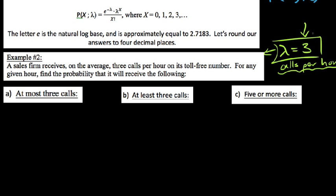Part A: find the probability that you get at most three calls. 'At most three calls' means three or less — it could be zero, one, two, or three calls. So we write this as P(X ≤ 3). This is an 'at most' situation, meaning less than or equal to. Here, lambda is three, and we want the number of occurrences X to be less than or equal to three. If you usually get about three calls per hour, there's a pretty good chance you'll get three or less.